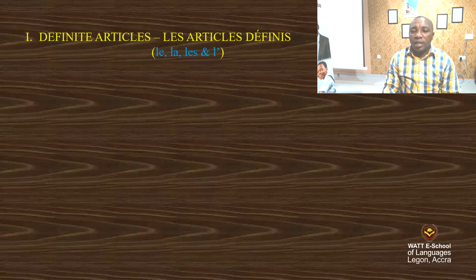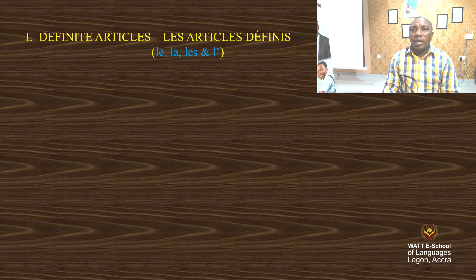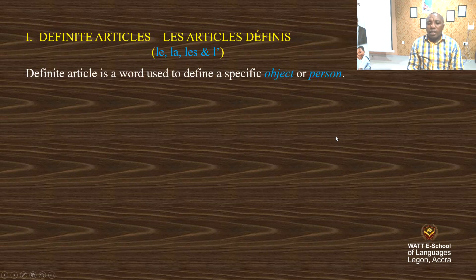Let's start with the definite articles. What is a definite article? A definite article is a word used to define a specific object or person — it is object-specific or person-specific.